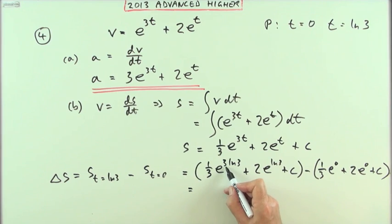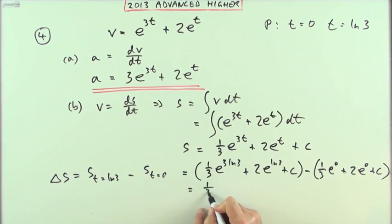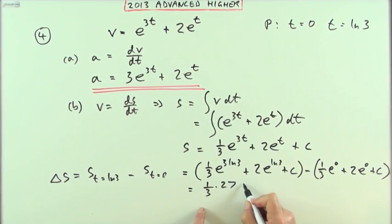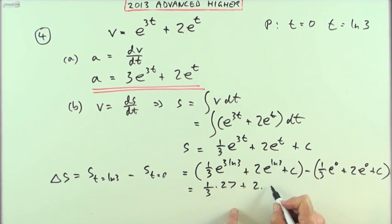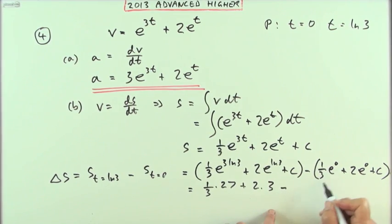Tidying that up, what have I got? Well, rather than writing the other line, that 3 would have to go in as a power, so that's the same as ln27. So that's e to the ln27, which is 27. I'll put that part down. So that's 1 third of 27 plus 2 times e to the ln3. We'll go back to 3. The c will cancel out the c. Minus a third, because that's just 1, minus 2.